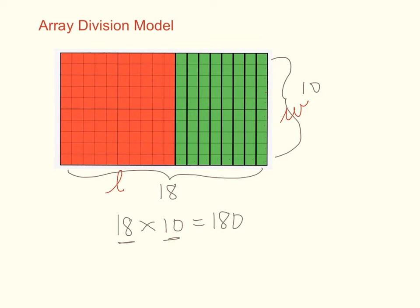We also know that inverse operations, multiplication and division are inverse operations of each other. So I could rewrite my multiplication equation, this right here, to be 180 divided by 10 equals 18, or it could also be written as 180 divided by 18 would equal 10.